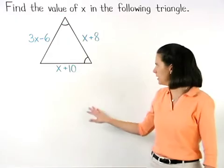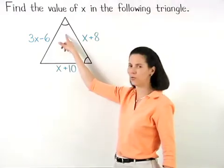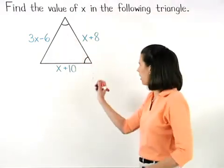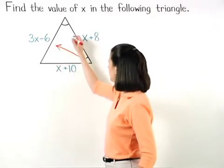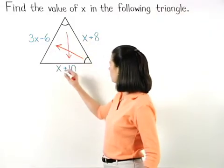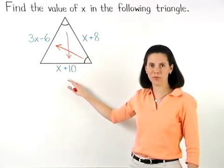So here, since we have two congruent angles, then the sides opposite those angles, the 3x minus 6 and the x plus 10, must also be congruent.